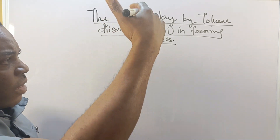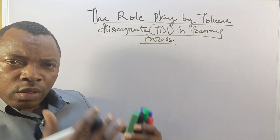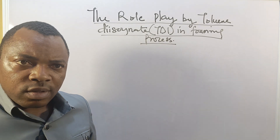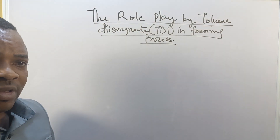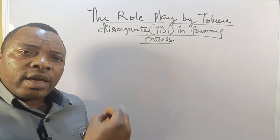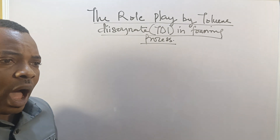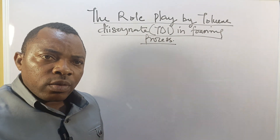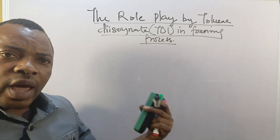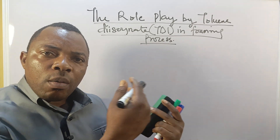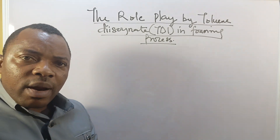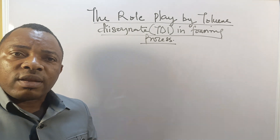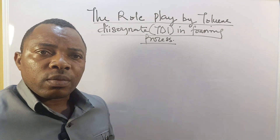Now, if you look at the production process, the TDI in question is being consumed in two ways. One: the amount that reacts with the polyol — that is the polymerization reaction. And two: the amount that reacts with water — that is the gas reaction.